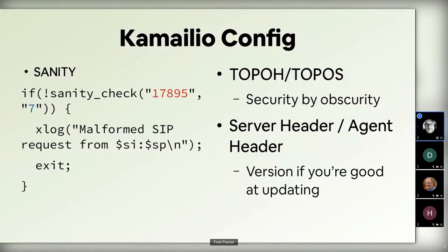In the config, you can also use a Sanity Check — Henning did a great presentation on this last year. Basically you're checking if your sent message is correct. The number 17895 is a sum of which checks you're doing — for example, a valid From, a valid To, a valid R-URI — you add them all together, come up with your number, and that's what you're checking, then drop if it fails.